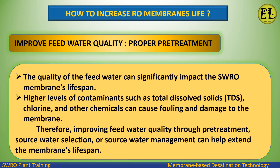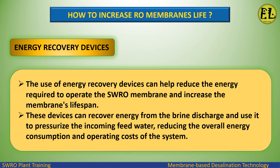The quality of the feed water can significantly impact the SWRO membrane's lifespan. Higher levels of contaminants such as total dissolved solids (TDS), chlorine, and other chemicals can cause fouling and damage to the membrane. Therefore, improving feed water quality through pretreatment, source water selection, or source water management can help extend the membrane's lifespan.